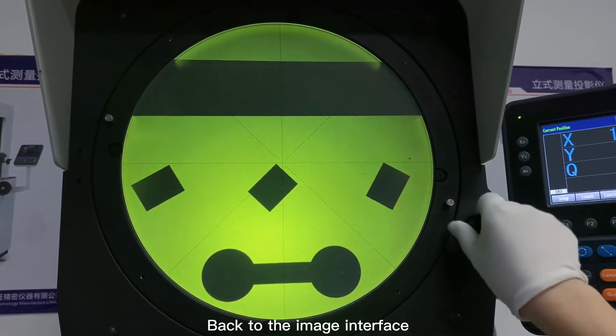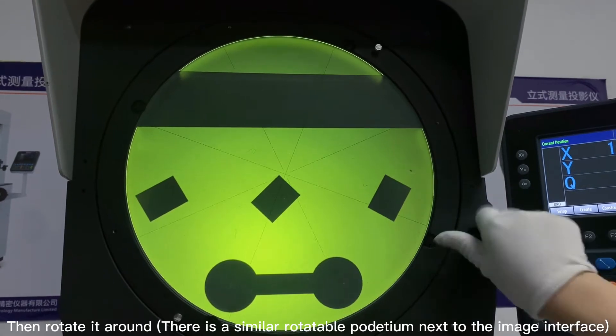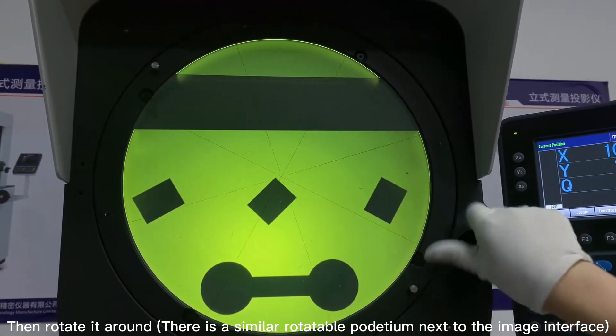Back to the image interface, find a vertex of the shape, then rotate it around. There is a similar rotatable podium next to the image interface.